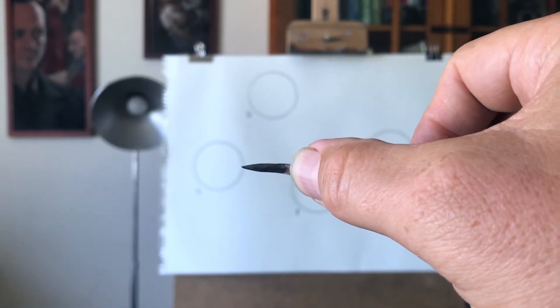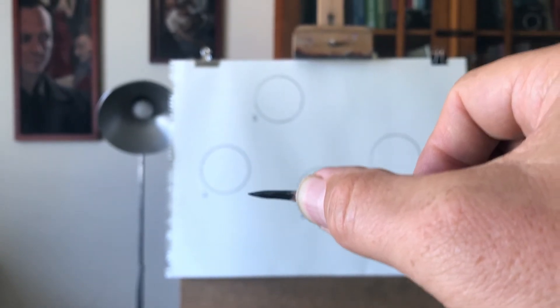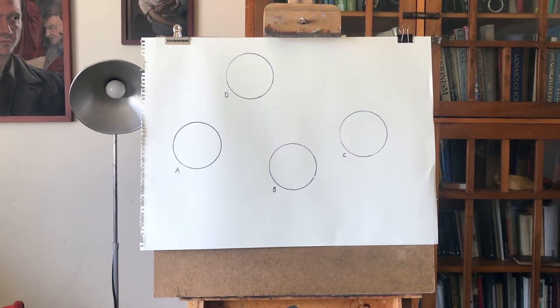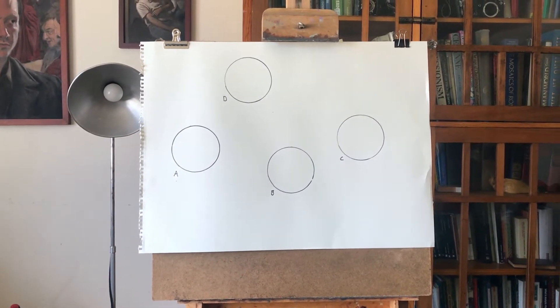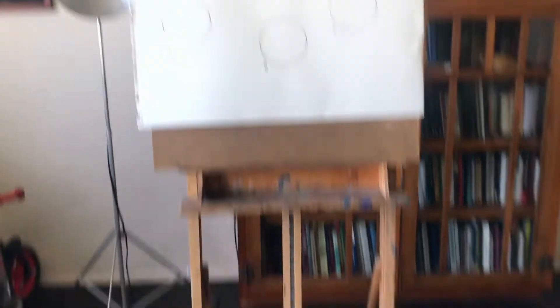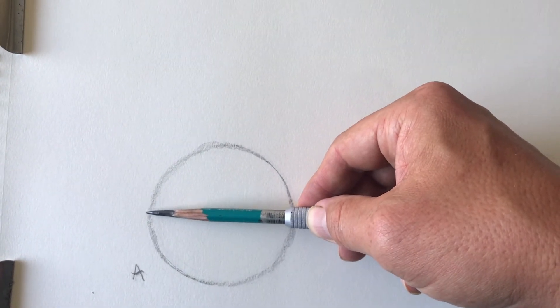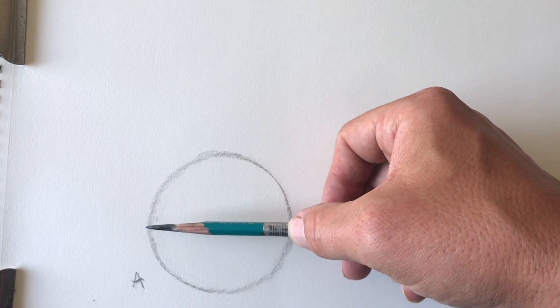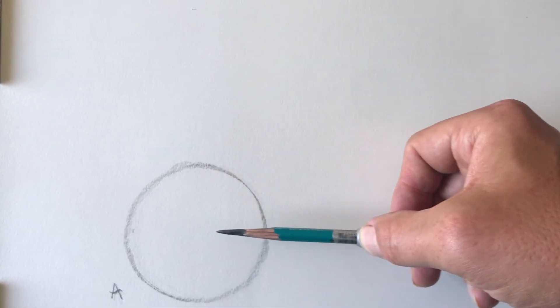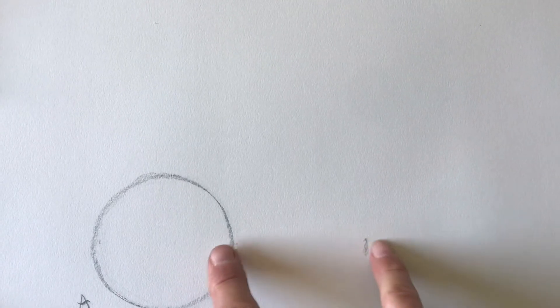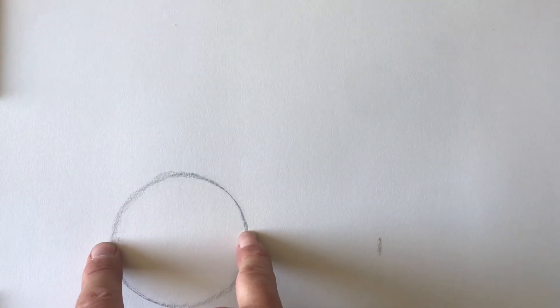Now look down and look at where your thumbnail is. Do you see that circle B starts right at the thumbnail? That tells you that the distance between circle A and circle B is exactly the width of one circle. So how do we use this information? We're going to use our pencil, line the tip with one side of circle A, your thumbnail with the other side of circle A, then move your arm over and remember that spot — mark it off. The distance here and the distance here should be the same, so now we know exactly where circle B is going to start.